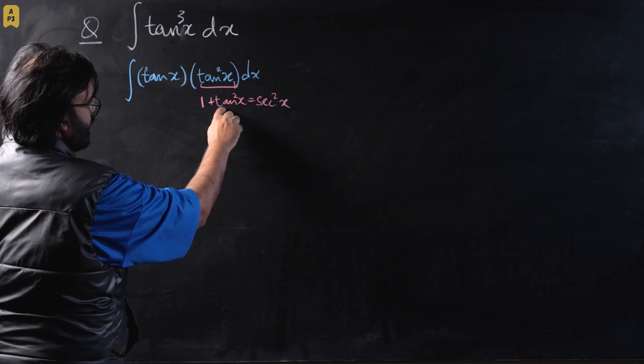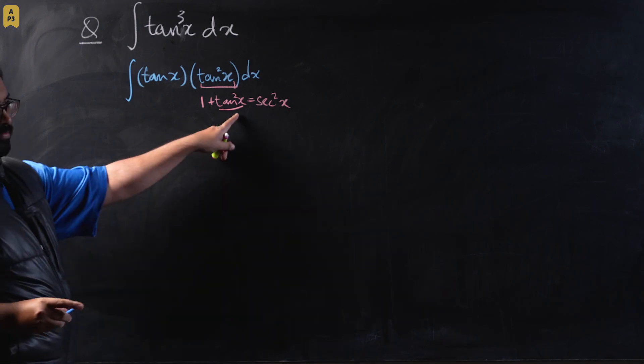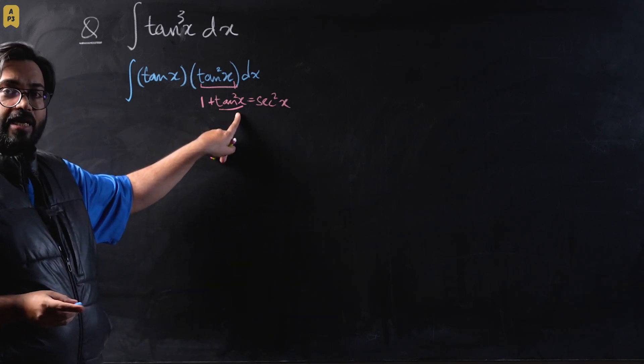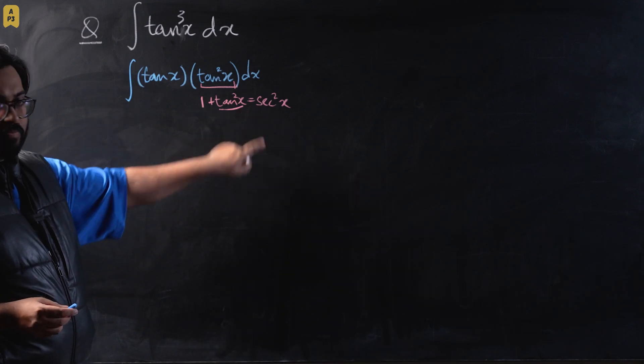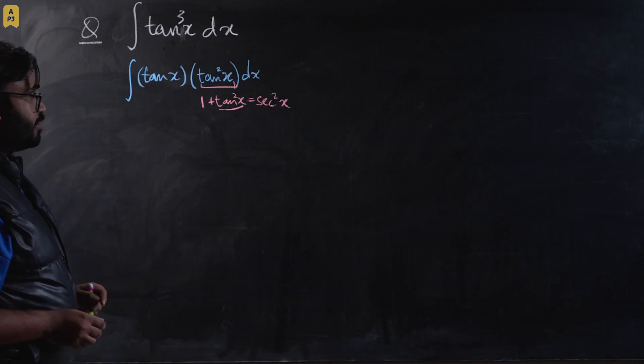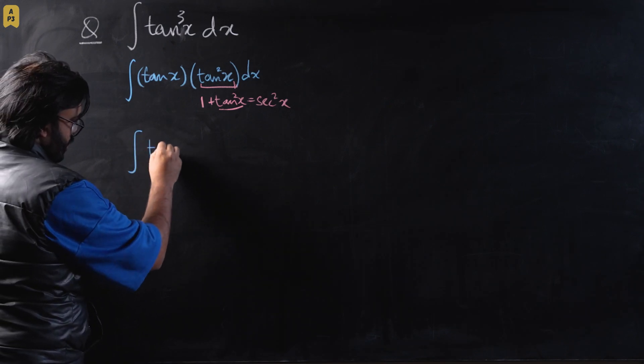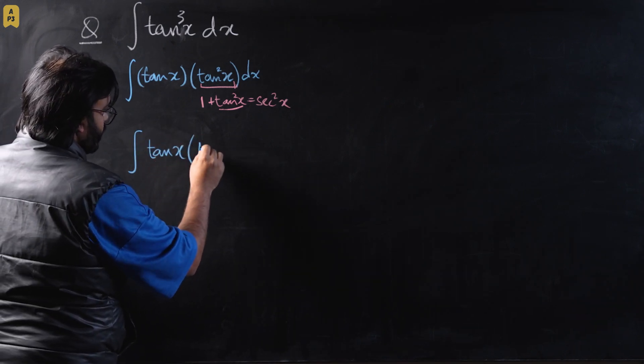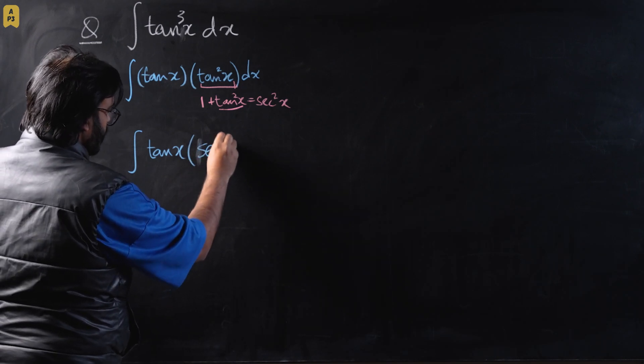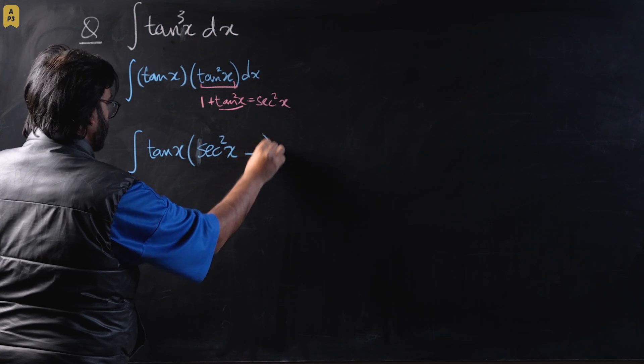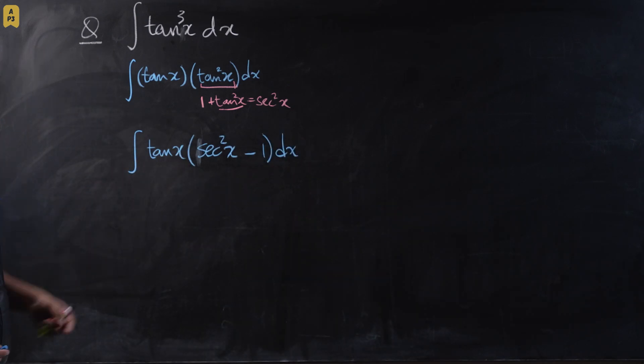If I make tan squared the subject over here, it would be secant squared x minus 1. If you have not memorized this identity and you're in A-levels Paper 3, I would highly recommend memorizing this identity. This will come really handy in many tricky situations. So it will become tan x times secant squared x minus 1.